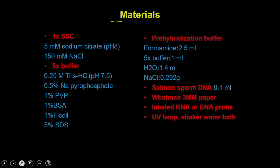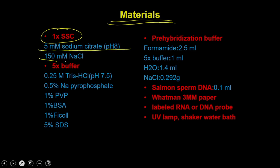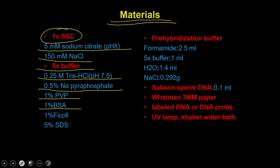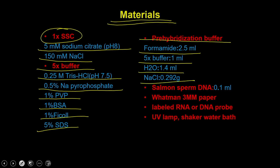For the materials required to start Northern blotting, you need SSC buffer — composed of 5 mM sodium citrate and 150 mM NaCl. You also need 5x buffers which are Tris buffers containing sodium pyrophosphate, 1% PVP, BSA, Ficoll, and SDS. Additionally, you need a hybridization buffer containing formamide, 5x buffer, water, and NaCl. You also require Salmon sperm DNA, which is used for blocking the membrane.